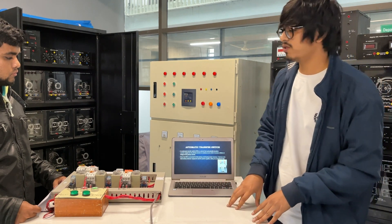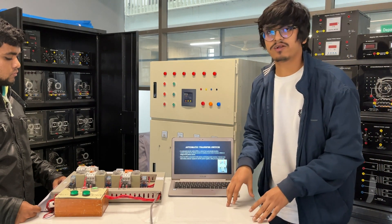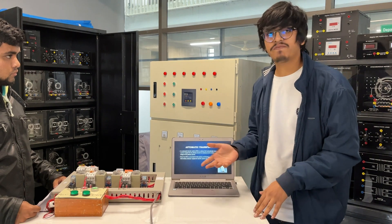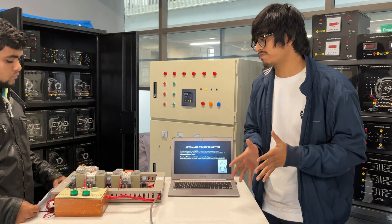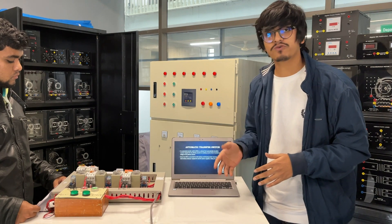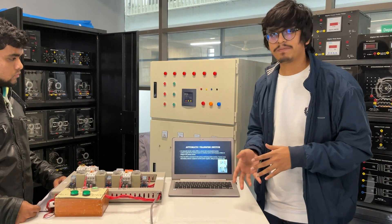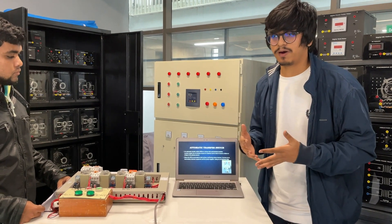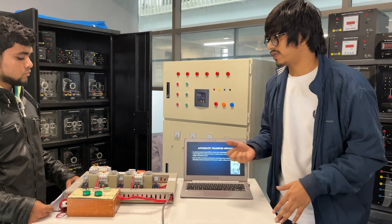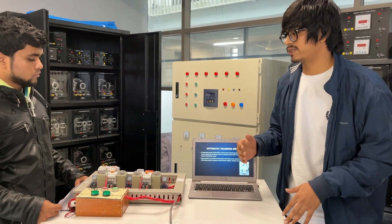For example, if we talk about PDB and generator in the industry, if PDB power fails, the automatic transfer switch will automatically transfer the power source to generator. And when the PDB or the power supply from the distribution side is up, then the automatic transfer switch will automatically change the source.